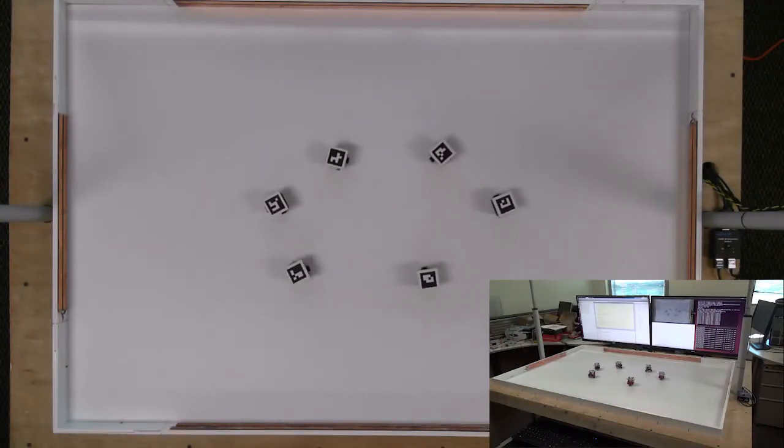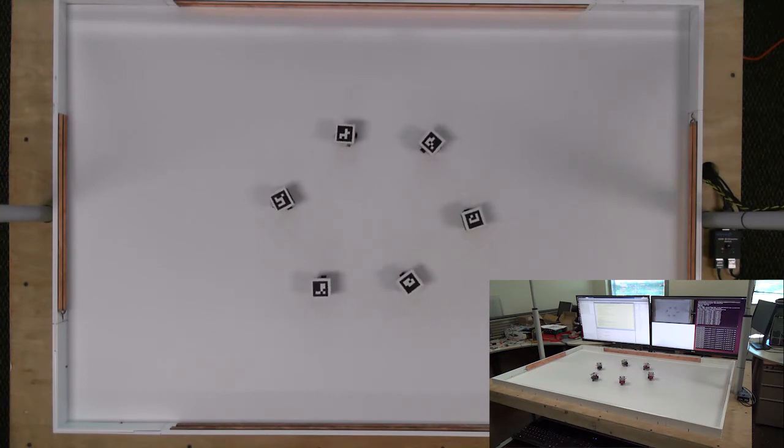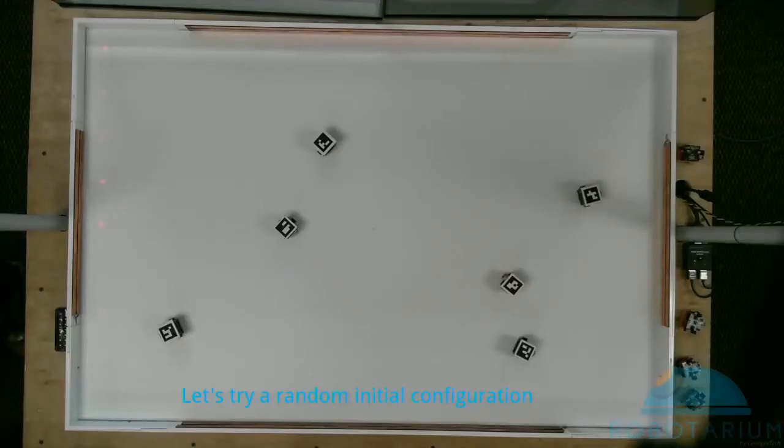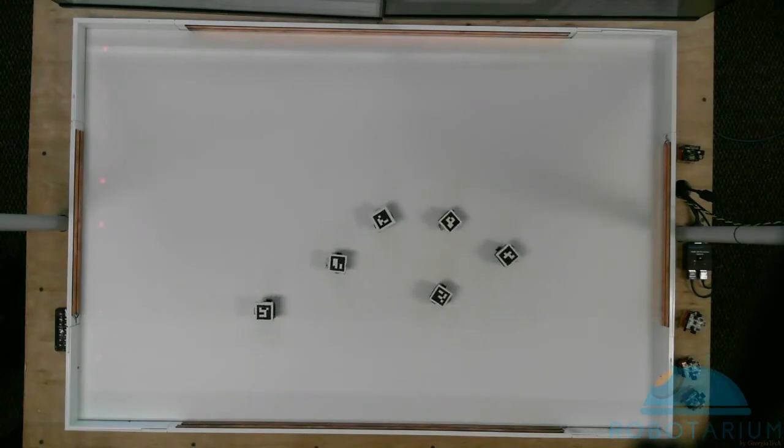Although this implementation is centralized, to test our strategy, only relative position information is used to compute the control for each agent. As can be seen, starting from random initial positions, the robots converge to the desired polygon formation.